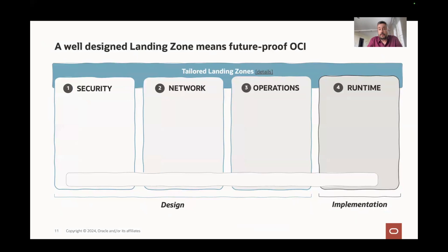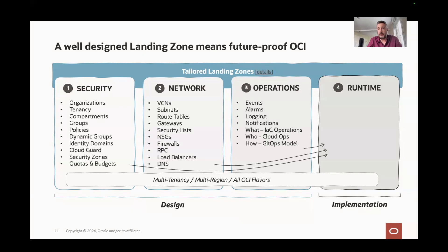How do you create a future-proof OCI? That means a well-designed landing zone, and it needs to cover network, security, and operations. The runtime — which is the implementation — is also crucial; that's your daily efforts afterwards. The resources you need to take into account for a well-designed landing zone: you start with security, then move to network, then with operations you bring visibility and connect all the dots on who does what and how.